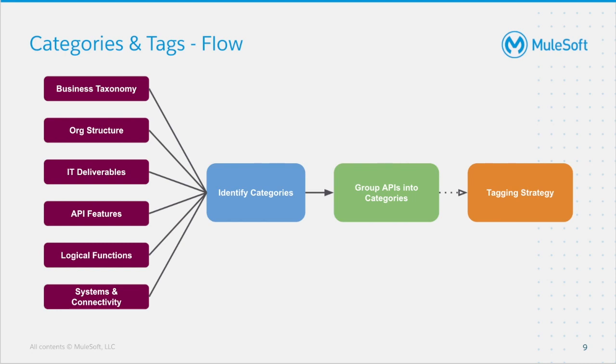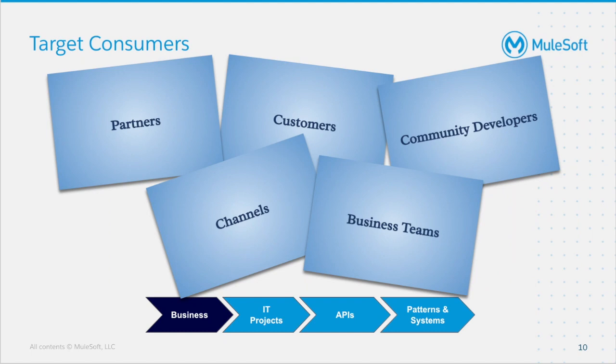I have identified my first category name as consumer using the top-down approach. Next, I will identify the context — in my case this will be business, which is the first layer in the top-down approach. After that, I will identify the category values. These I've chosen as customers, internal, external, and partner as shown on the slide. The last thing I need to do is find out what asset types these will be applicable to. In my case, these will be REST APIs, SOAP APIs, and HTTP APIs.